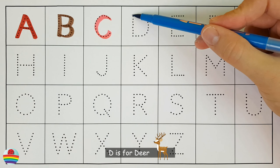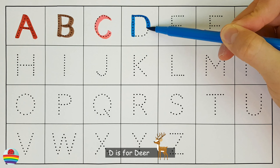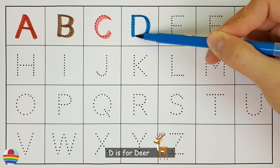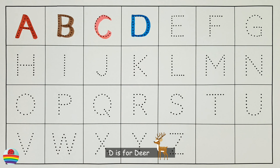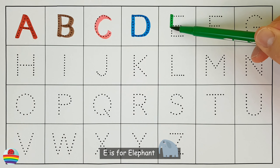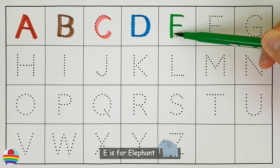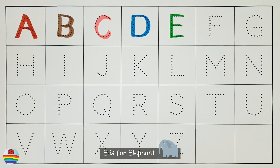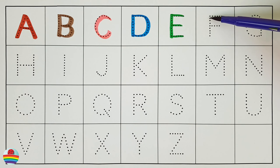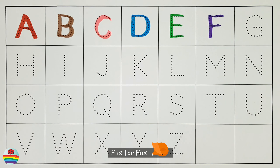D. D is for deer. D. E. E is for elephant. E. F. F is for fox. F.